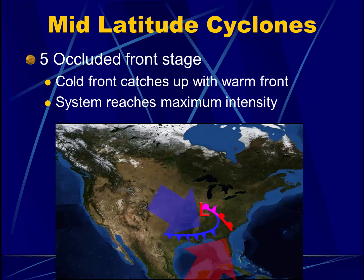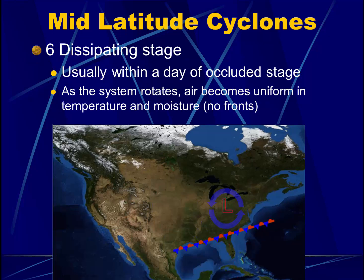Finally, we may get to the occluded front stage if the cold front catches up to a warm front. At this point, the system reaches its maximum intensity. Eventually, after the warm air source is cut off, the circulating air around the area of low pressure will dissipate. This usually happens within a day of the occlusion. As the air masses circulate around each other, they blend and become uniform in temperature and moisture. That again will establish an air mass with no fronts, and we may see the formation of a new stationary front boundary south of the remnant low.